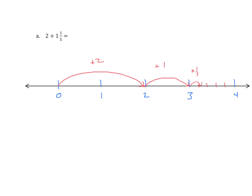So what do we have? Our answer is, if we look at the whole number, is 3. And then we go up 1 fifth, so the answer is 3 and 1 fifth. Let's do another example.